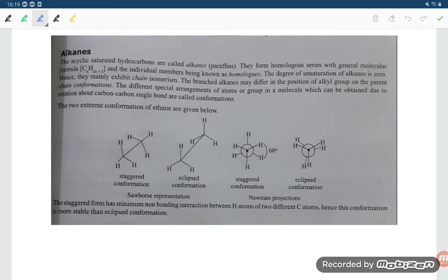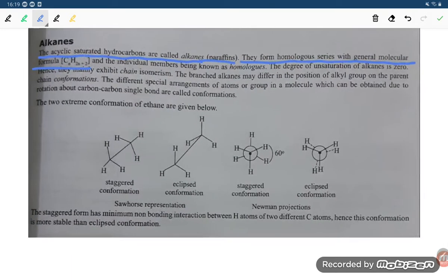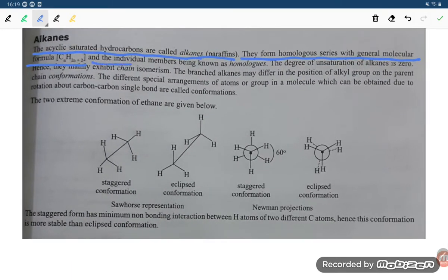Let us have a look that is the acyclic structure hydrocarbons called alkanes, that is paraffins. They form the homologous series with the general molecular formula CnH2n plus 2 and the individual members are being known as homologues.